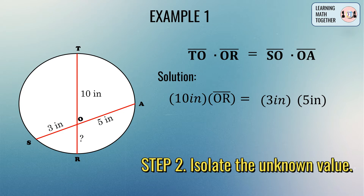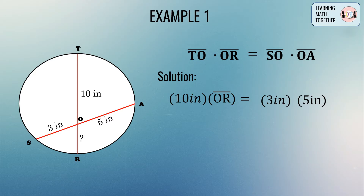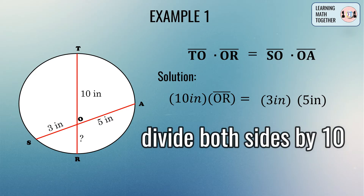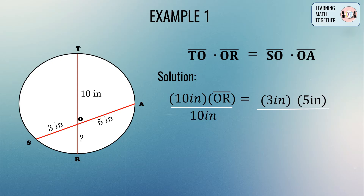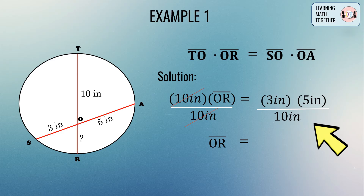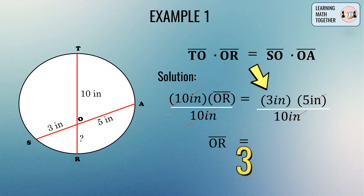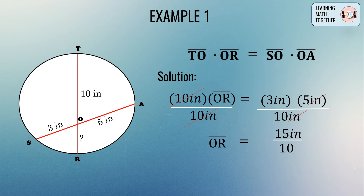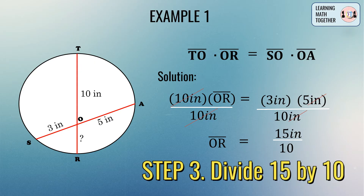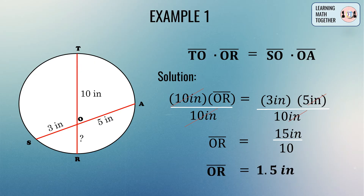Next, we isolate line segment OR by dividing both sides by 10 inches, which simplifies the left side to just line segment OR. We can simplify: 3 inches times 5 inches gives 15 inches, divided by 10, which gives us 1.5 inches. Therefore, the length of line segment OR is equal to 1.5 inches.